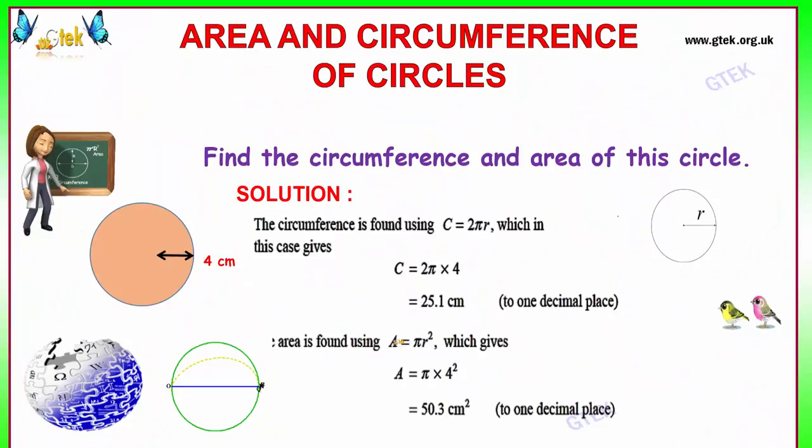Let's go to the problem now. Find the circumference and area of the circle. The circumference is found using the formula 2 pi r, and here the circle radius is 4 cm. 2 pi into 4, pi value is 3.14. The answer is 25.1 cm.